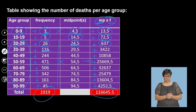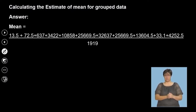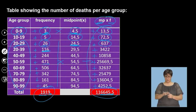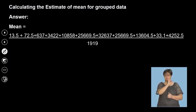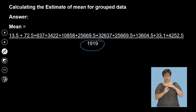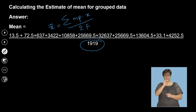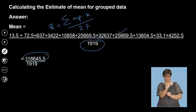The mean is the sum of all midpoint-times-frequency values divided by the total frequency — that is x-bar, the estimated mean. When we calculate this — the total sum on top divided by the total frequency of 1,919 — we get 60.78. That's the average age of dying from COVID-19 in this dataset.